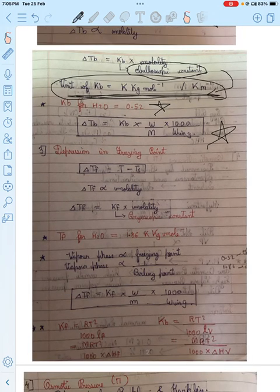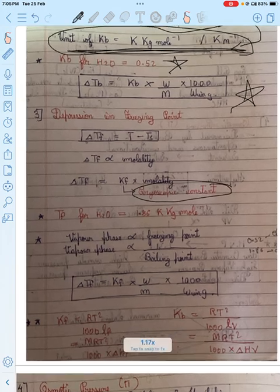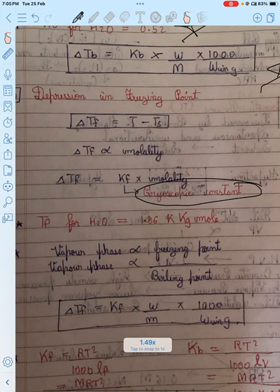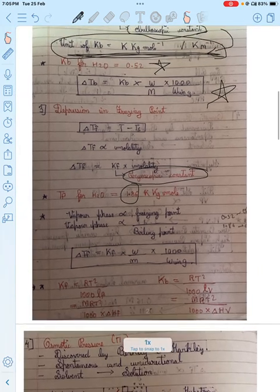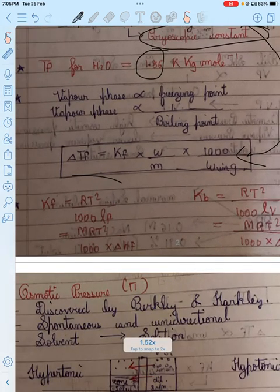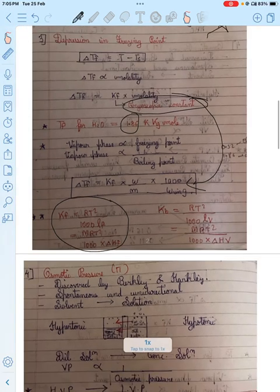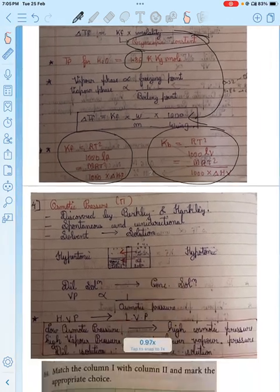Then depression in freezing point. Like there is boiling point with ebullioscopic constant, freezing point has cryoscopic constant. If the value for water is asked, you can substitute the value. Sometimes it's asked in the form of Kf and Kb, so just look at it once and remember - if asked, it will become easy to attempt.